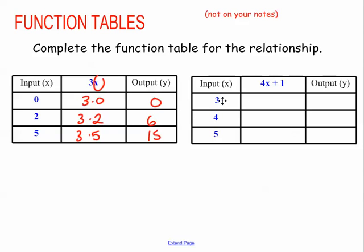Let's plug in over here. My x values in this one would be 3, 4, and 5, so I'm going to plug those in. 3 times 4 is 12, plus 1 is 13. 4 times 4 is 16, plus 1 is 17. 5 times 4 is 20, plus 1 is 21.